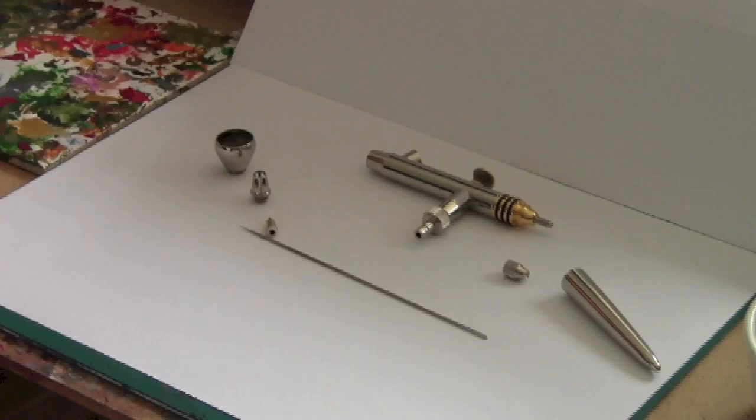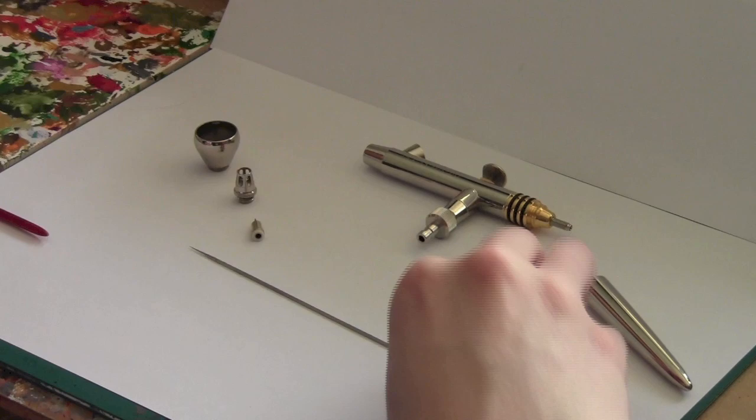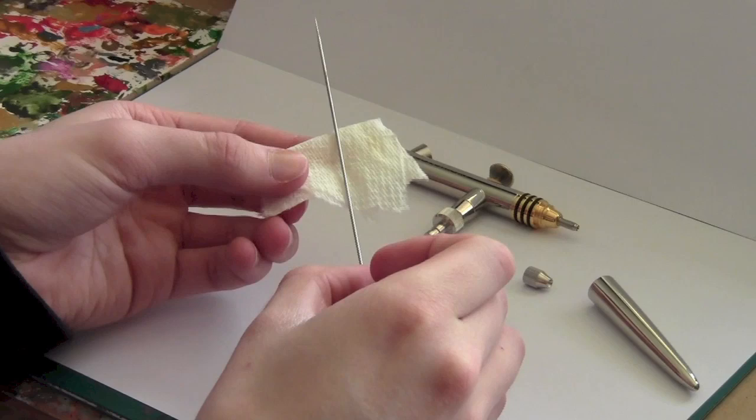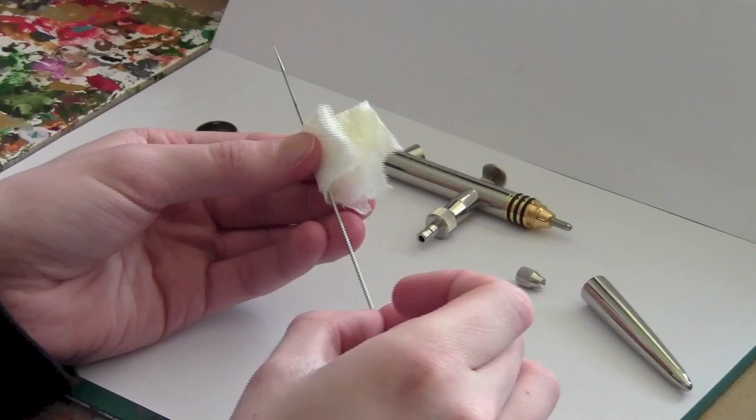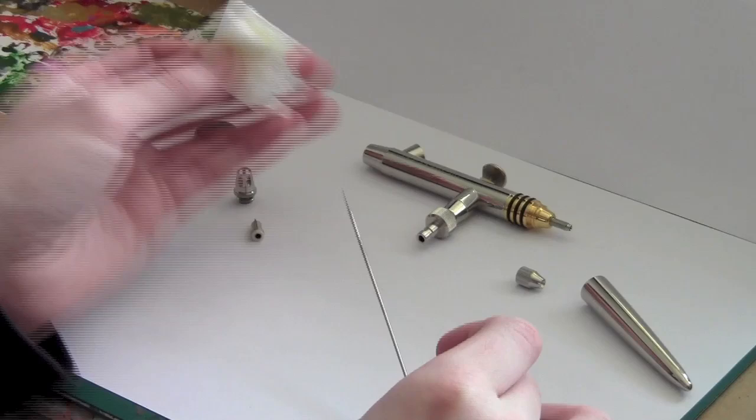Okay so when cleaning you can use anything like I said, you can use water or you can use alcohol or Windex, anything that you want to use. For the needle just use a bit of your chosen liquid on a kitchen roll and just really gently bring it over the needle, being careful not to do any damage to it. And actually clean it right up.